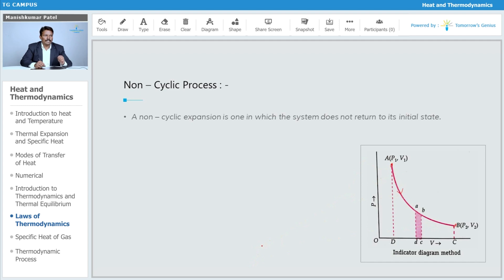The system does not return to its initial state, so how can we find the work done? Consider any small strip here. This is CD, which shows the volume. This is nothing but dV, the volume element, and this is the pressure which is constant for it.